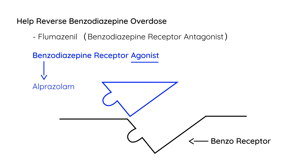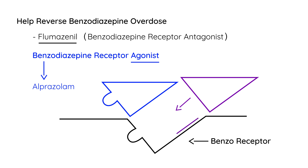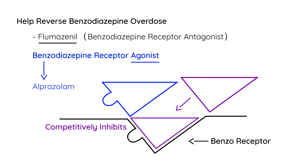These are agonists. But we have a benzodiazepine receptor antagonist called flumazenil, and its shape is different. If it were to come and sit at the receptor site, it would actually block it. This is called competitive inhibition — it competitively inhibits the activity at the benzodiazepine recognition site on the receptor complex.